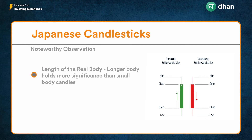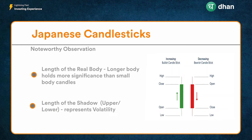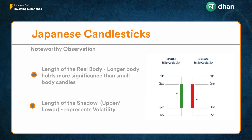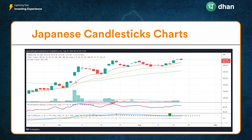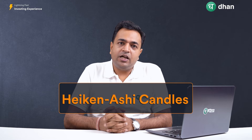Two very important things to note about Japanese candlesticks: point number one, the length of the body of the candle — the bigger the length of the body, the better is the meaning and significance of that candle. Point number two, the length of the shadows or wicks — if you have candles with very long wicks on the top or bottom, it means the price was more volatile in that period. Whenever big body candles are accompanied with higher volumes, they have more significance.